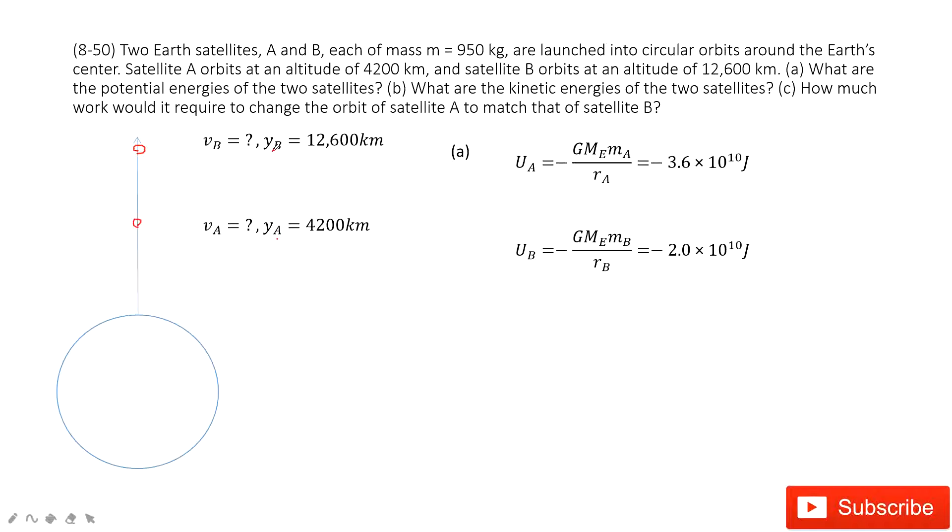The first one, we need to find the potential energy for these two satellites. For the gravitational potential energy, this is the equation we get in the textbook: negative GM, this M is for the Earth, and the mass m for satellite A, divided by rA. And rA is given as yA.